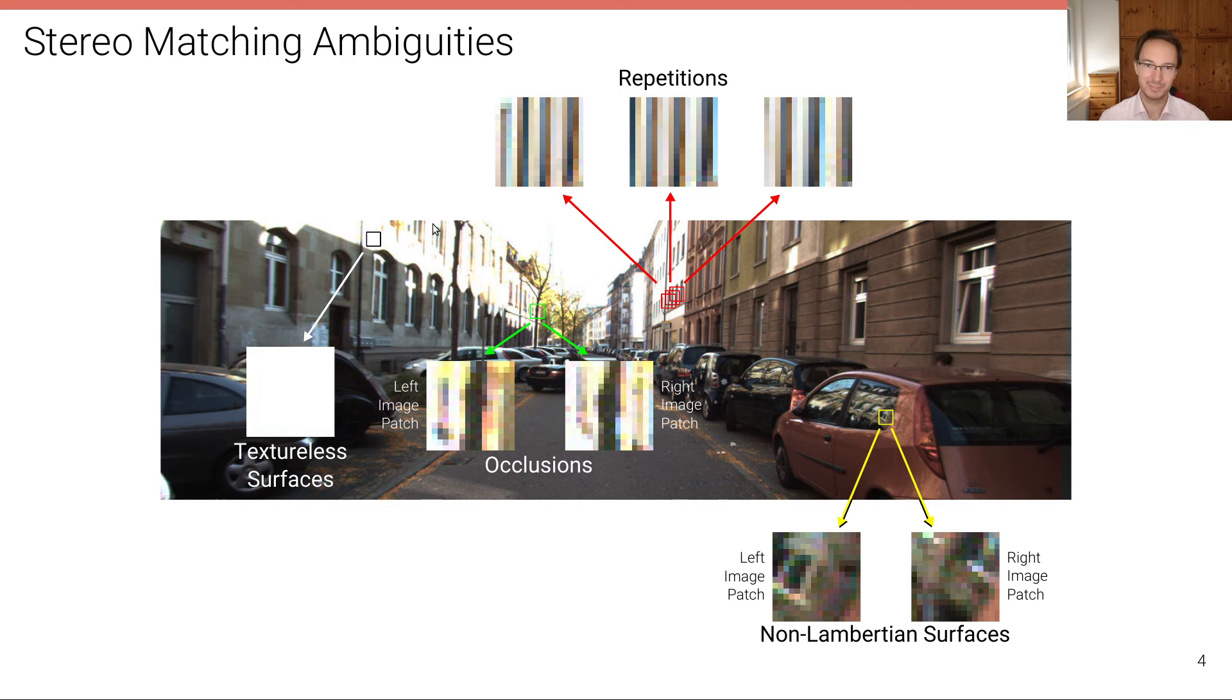Well, there's a lot of ambiguities arising due to, for example, textureless surfaces that match to many textureless surfaces in the other image, repetitions in the image, occlusions, as well as non-Lambertian surfaces.